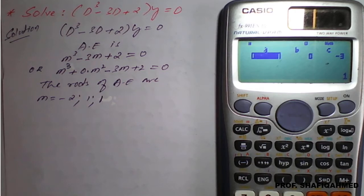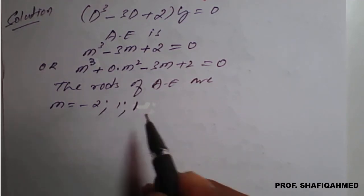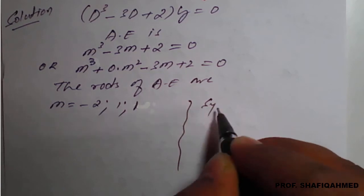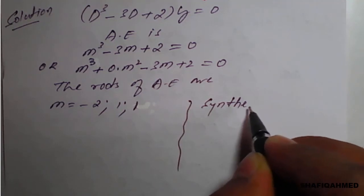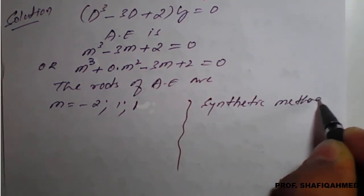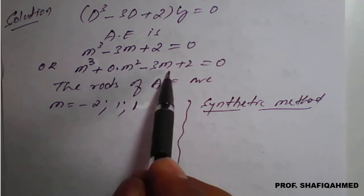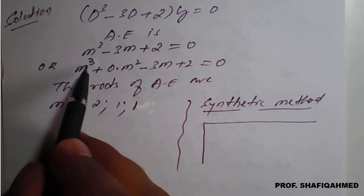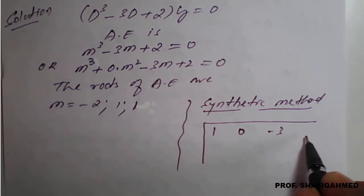Instead of using the calculator, I will also show the synthetic method of getting the roots manually. In the synthetic method, we take the equation m³ - 3m + 2 = 0 and write its coefficients: coefficient of m³ is 1, coefficient of m² is 0, coefficient of m is -3, and the constant is 2.